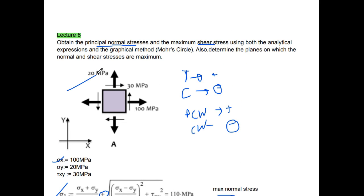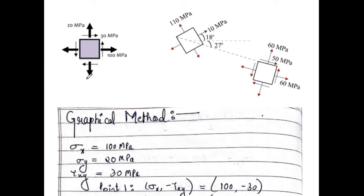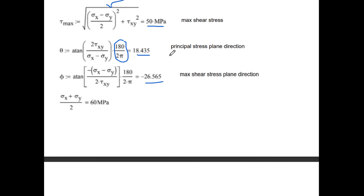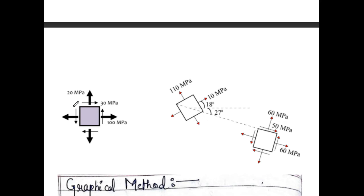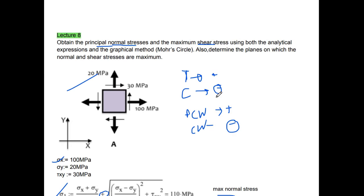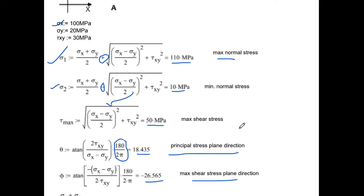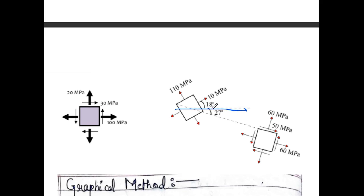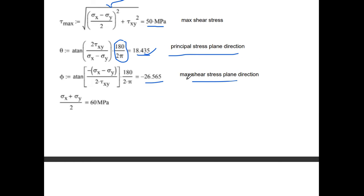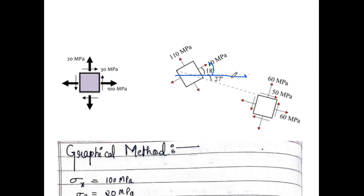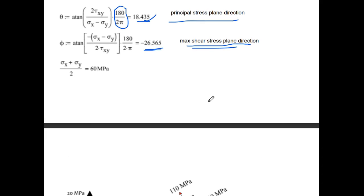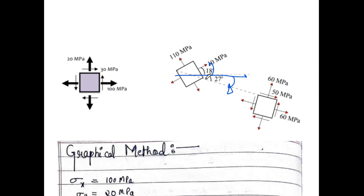Before moving to the graphical method, let me show how to draw the principal stress plane direction and shear stress plane direction. From the x-axis, as mentioned, anti-clockwise is positive and clockwise is negative. Since θ is positive, we rotate anti-clockwise to get the principal stress plane. Since φ is negative, we rotate clockwise to get the maximum shear stress plane. The final positions show the planes on which principal stress and maximum shear stress act.